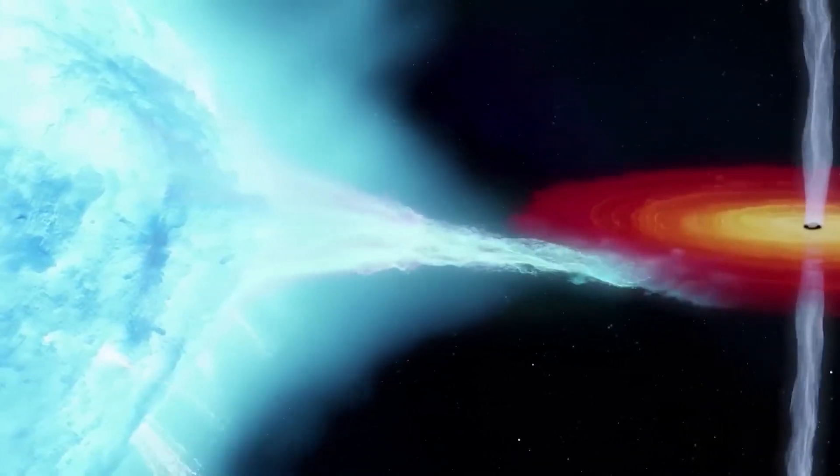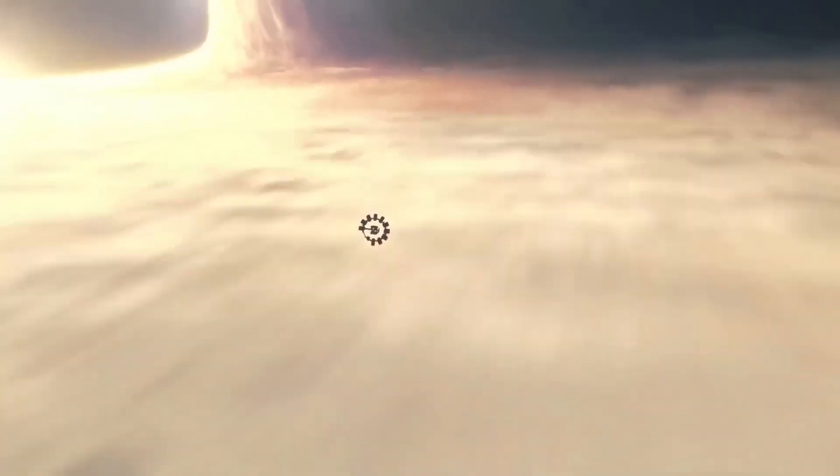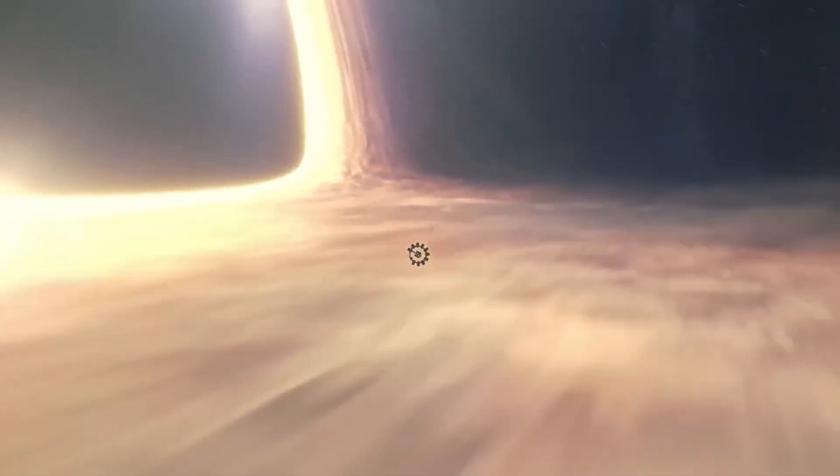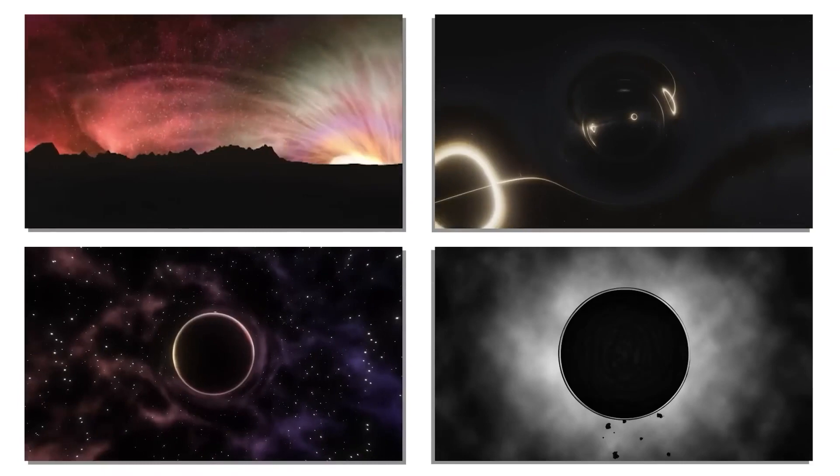Another way to detect black holes is through gravitational lensing, where the gravity bends light from distant objects, creating a distorted image that we can observe. Even though we've learned a lot about black holes, there's still so much we don't know.